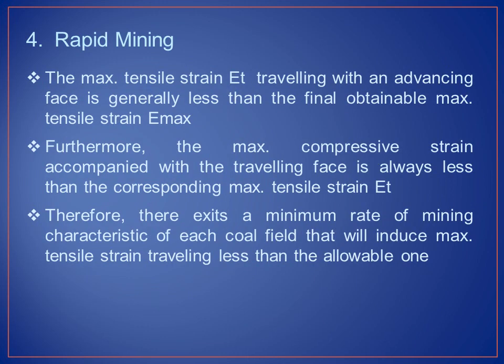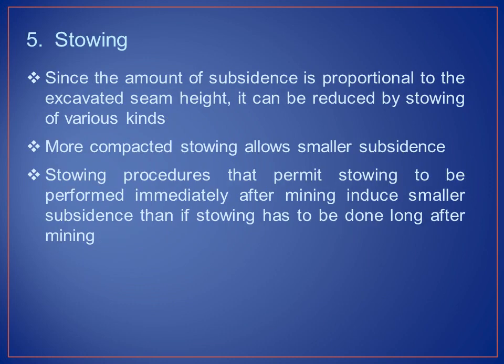Rapid mining: the maximum tensile strain ET traveling with an advancing face is generally less than the final obtainable maximum tensile strain Emax. Furthermore, the maximum compressive strain accompanying the traveling face is always less than the corresponding maximum tensile strain ET. Therefore, there exists a minimum rate of mining characteristic of each coal field that will keep the induced maximum tensile strain below the allowable value. Stowing: since the amount of subsidence is proportional to the excavated seam height, it can be reduced by stowing of various kinds. More compacted stowing allows smaller subsidence, and stowing performed immediately after mining induces smaller subsidence than if done long after mining.